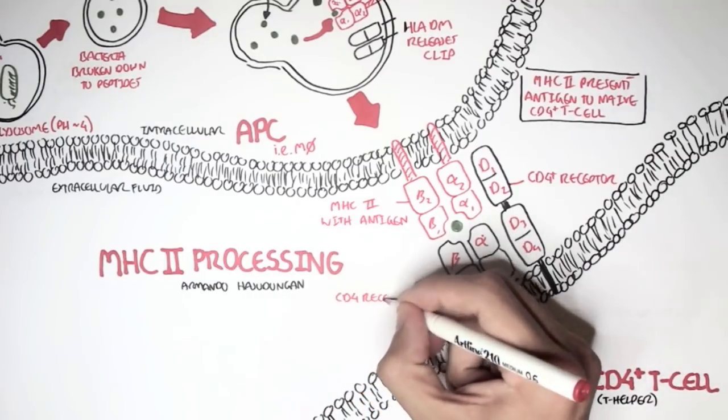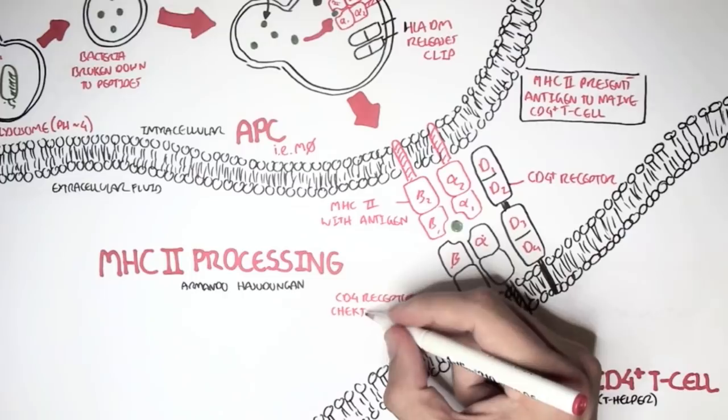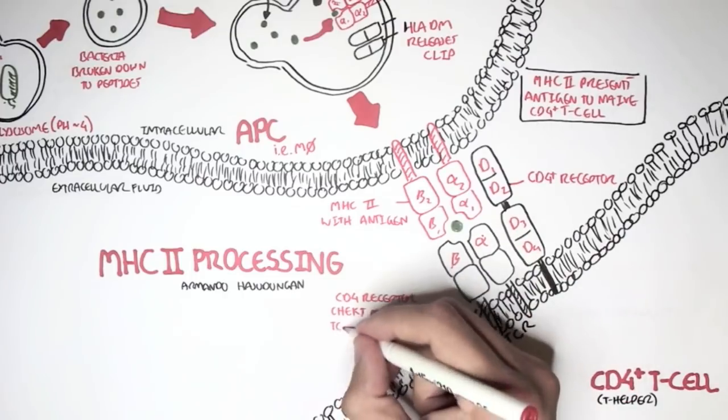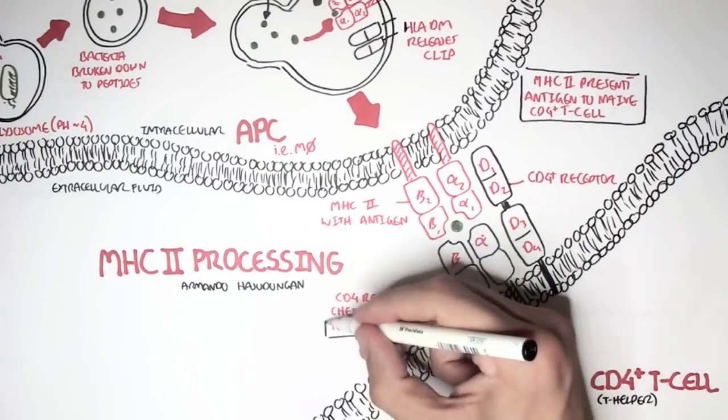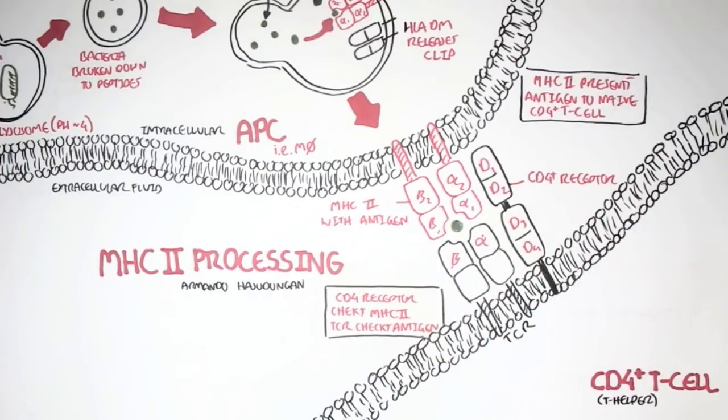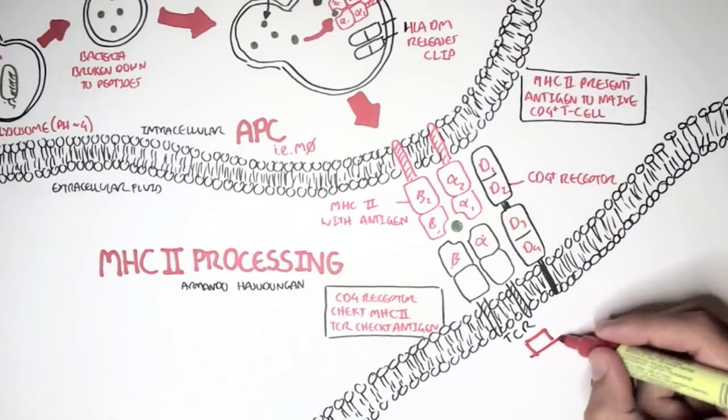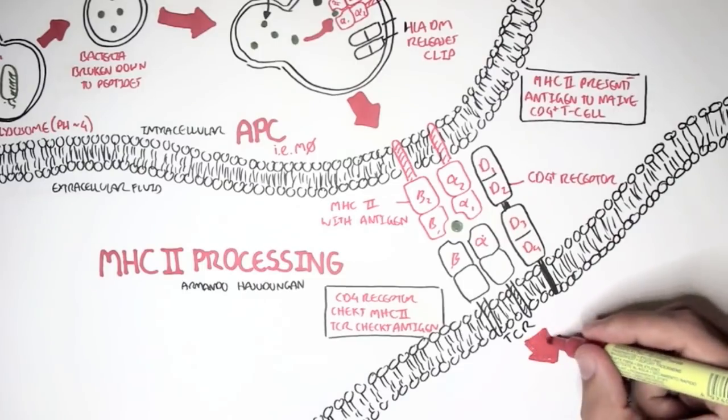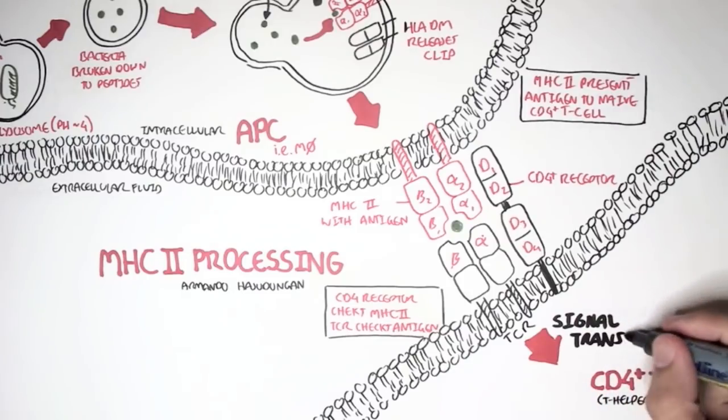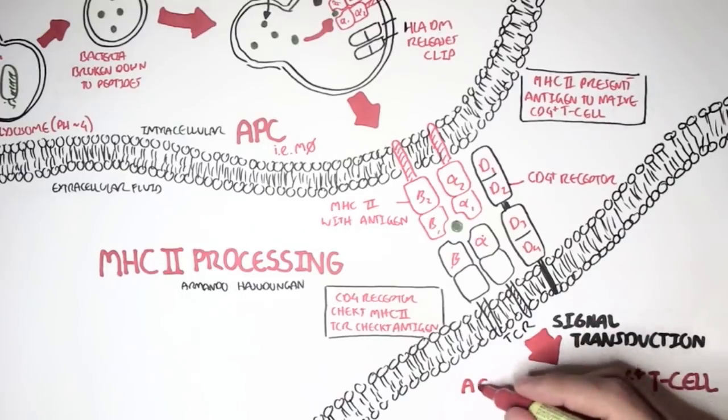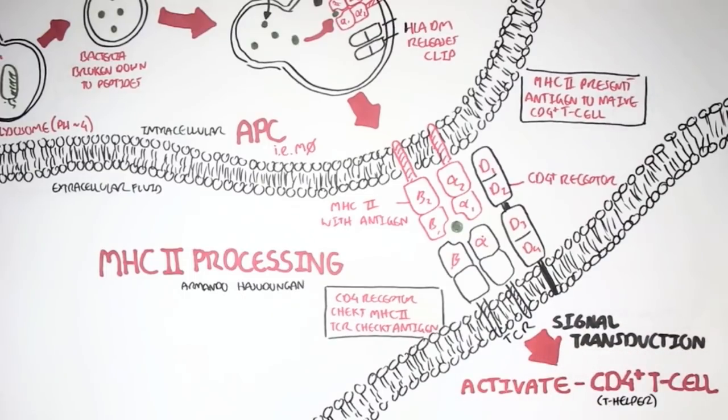If the CD4 receptor checks the MHC class II and confirms it, and the TCR checks the antigen and confirms it, this will trigger a cascade of events within the naive CD4 T cell. The signal transduction cascade will eventually lead to the activation of the naive CD4 T cell to become a T helper cell.